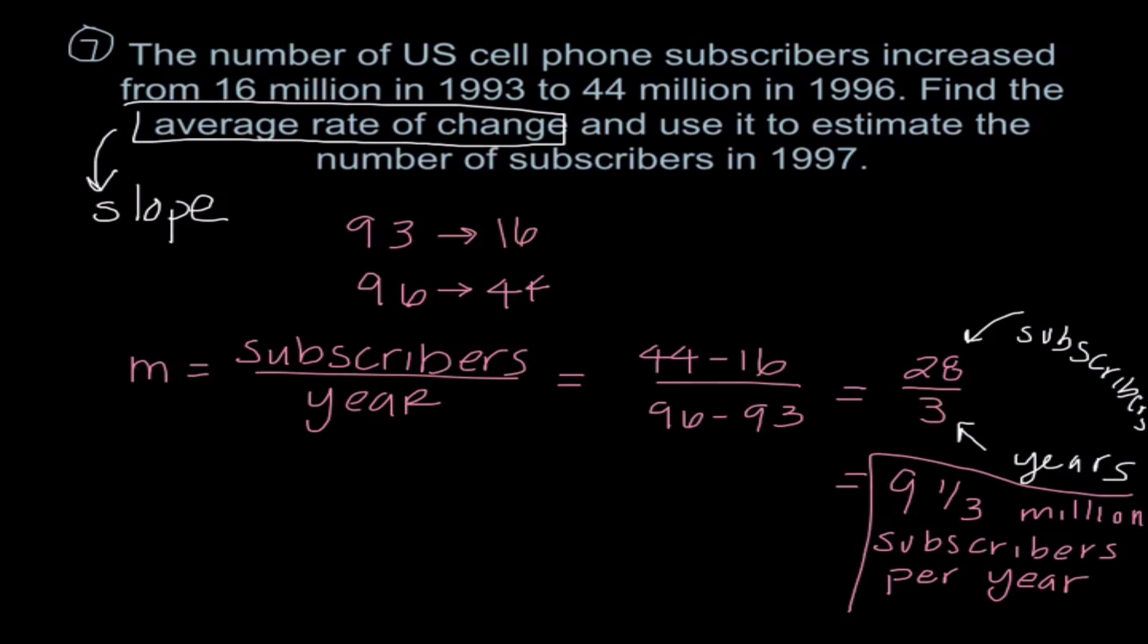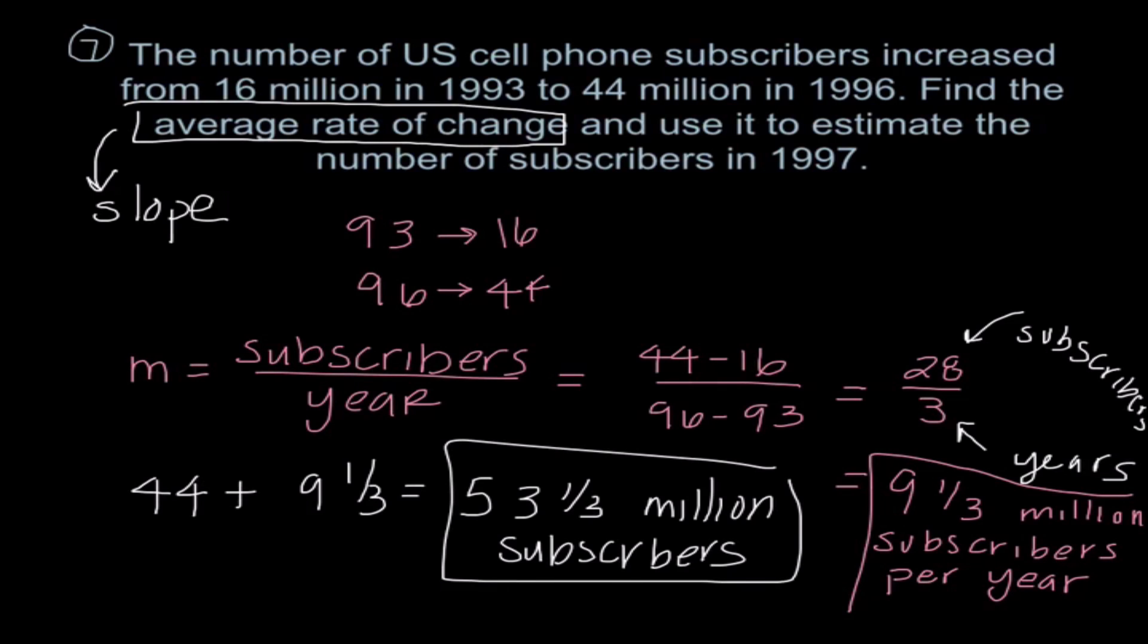Now it's going to ask us to use that to estimate the number of subscribers in 1997. Well, if I know the number of subscribers in 96, can't I just add the average rate of change to get what it is in 97? So I'm going to do 44 million plus 9 and 1 third million. So that would tell me 53 and 1 third million subscribers in 1997. Now, if this had been further down the line, we would have to kind of add in a multiple of 9 and 1 third depending on how many years down the line we're looking. So this is an example of how we do see rate of change quite frequently in real life.